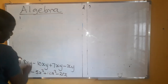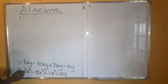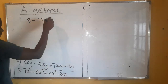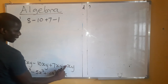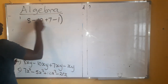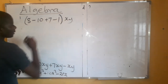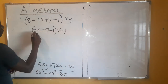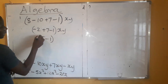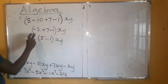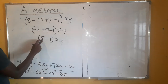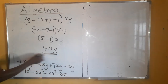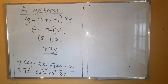Now what are we remaining with? These ones here. We have 8 minus 10 plus 7 minus 1. Here there is a minus 1 — why? What is common is xy. This gives us minus 2. Then 5 minus 1 times xy. When signs are different, subtract the smaller from the larger — that's 5 — and 5 keeps the sign of the larger number. This gives us 4xy. That is our answer.